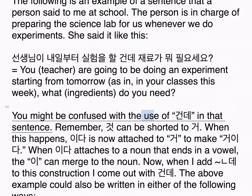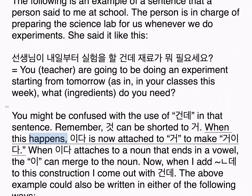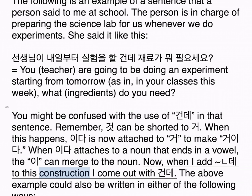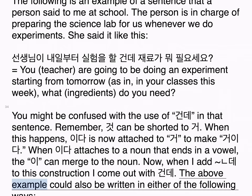You might be confused with the use of 건데 in that sentence. Remember, 거 can be shortened. When 는데 attaches to a noun that ends in a vowel, the sounds can merge. When you add 는데 to this construction, you come out with 건데. The above example could also be written in either of the following ways.